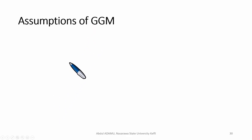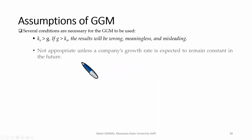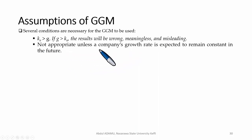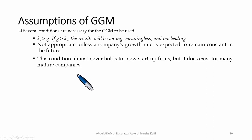What are the assumptions of the Gordon Growth Model? One assumption is that the required rate of return must be greater than the growth rate. If the growth rate is greater than the expected rate of return, the result will be wrong, meaningless, and misleading. The second assumption is that this model is not appropriate unless a company's growth rate is expected to remain constant. This condition can also never hold for a new startup, since startups often have a higher growth rate initially before normalizing to a constant rate.